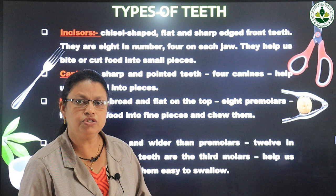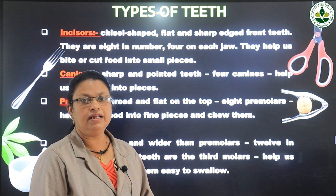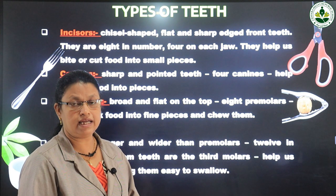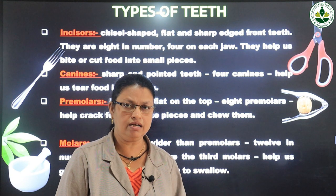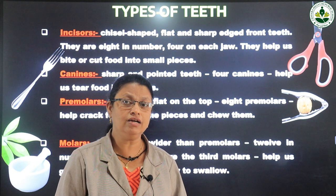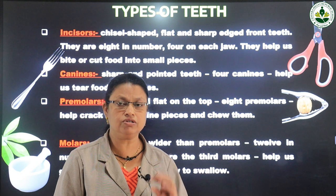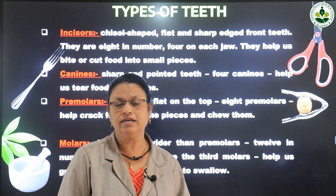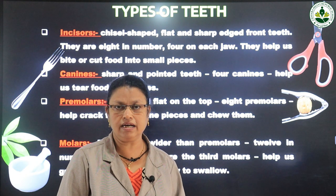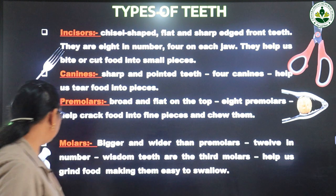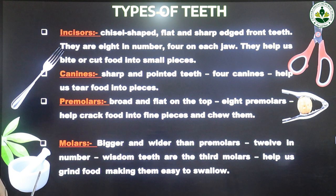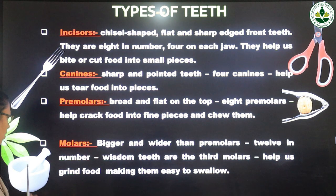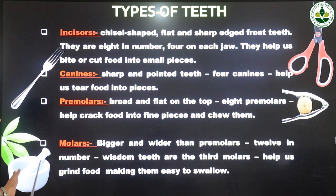The fourth category is molars. They are 12 in number — bigger and wider than premolars — and wisdom teeth come under this group. There are six molars in each jaw. Here, a picture of a mortar and pestle is shown; our mothers use this at home for grinding chillies, pepper, and onions.